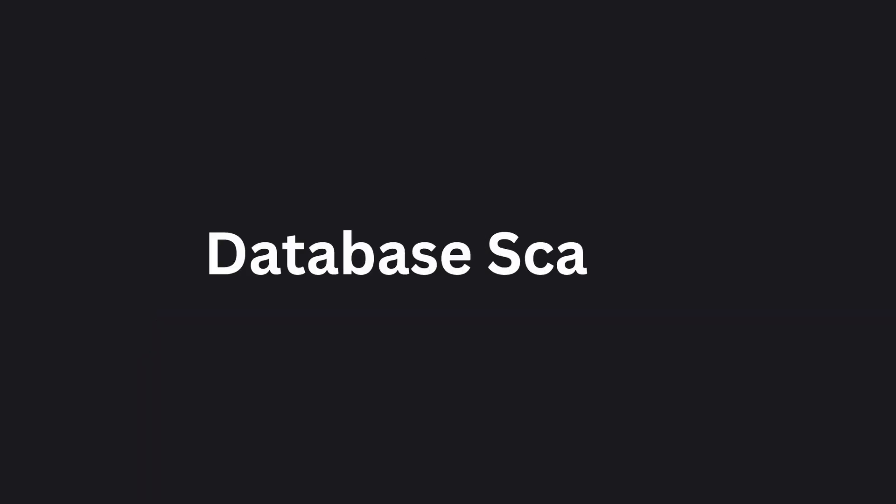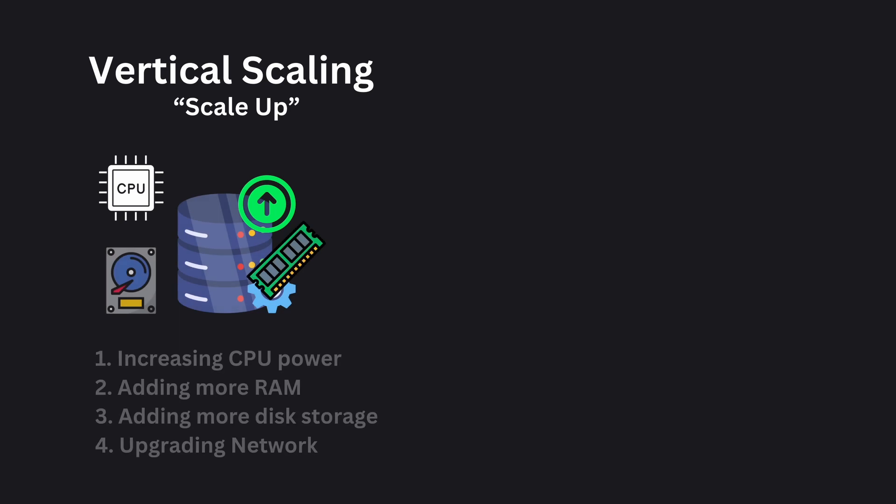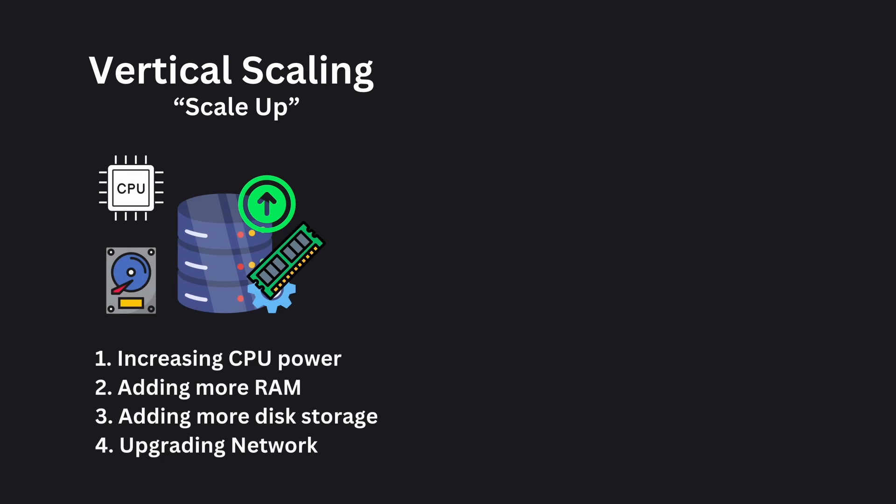Now let's see how we can scale databases. The first option is vertical scaling, or scale up. In vertical scaling, you improve the performance of your database by enhancing the capabilities of the individual server where the data is running. This could involve increasing CPU power, adding more RAM, adding faster or more disk storage, or upgrading the network. However, there is a maximum limit to the resources you can add to a single machine, so it is very limited.